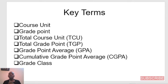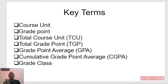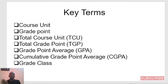What are some of the key things you need to take note of? Your course unit, which is the unit assigned to each of the courses that you are doing. Number two, your grade point, which is the point attached to every score that you get. Your total course unit — that's the total unit of all the courses you're offering in a semester. Your total grade point, which is the total point of what you scored in each of those courses. Then your grade point average, which is the same thing as GPA. Your cumulative grade point average — CGPA — and then your grade class.